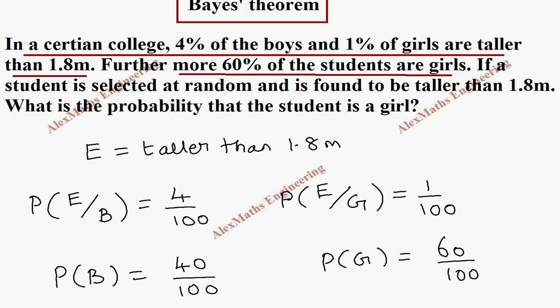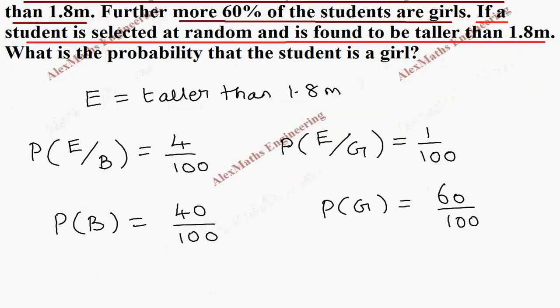And now further, in the question they have given, if a student is selected at random, it is found to be taller than 1.8 meter. So we already know, it is 1.8 meter taller. So we know E already. So what is already known as the denominator. What we have to find is, the probability that the student is a girl. So what probability we need, we have to write the numerator.